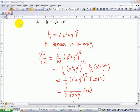Let's look at the third example of partial differentiation. If h equals square root of x squared plus y squared, that means h is equal to (x² + y²) raised to the power of one half.